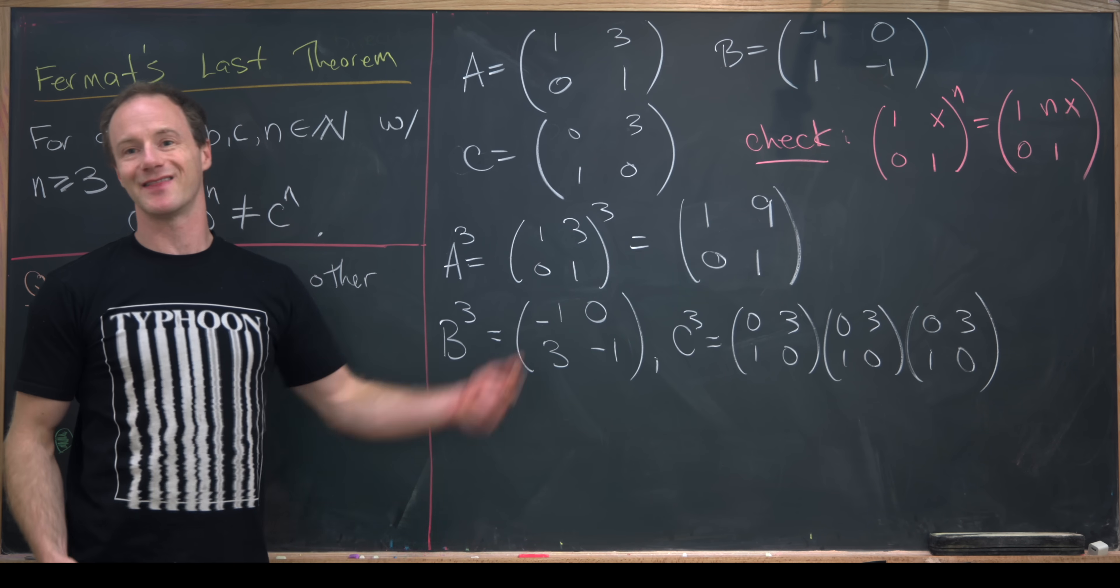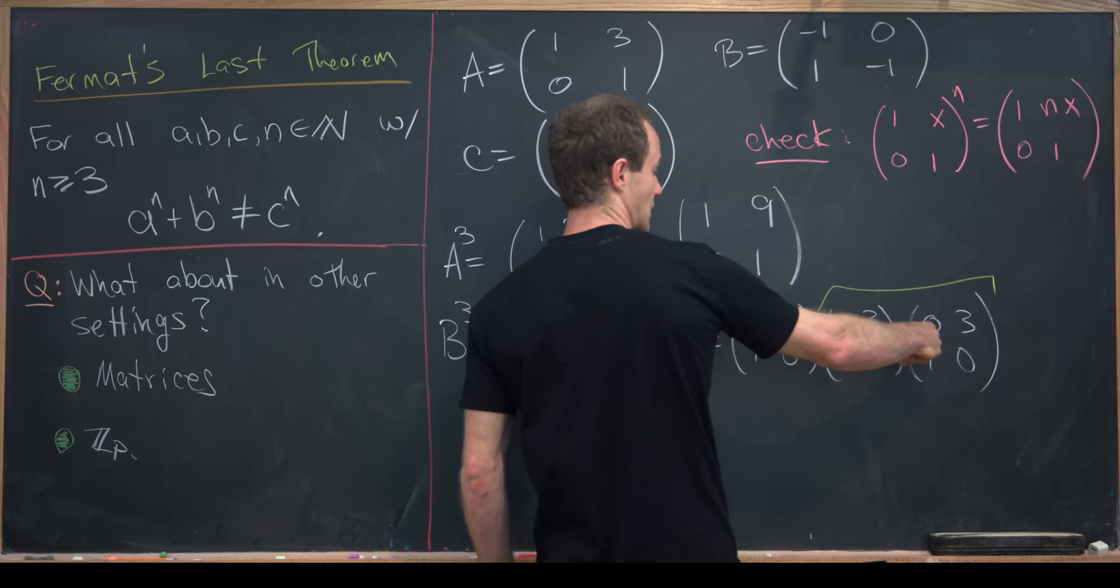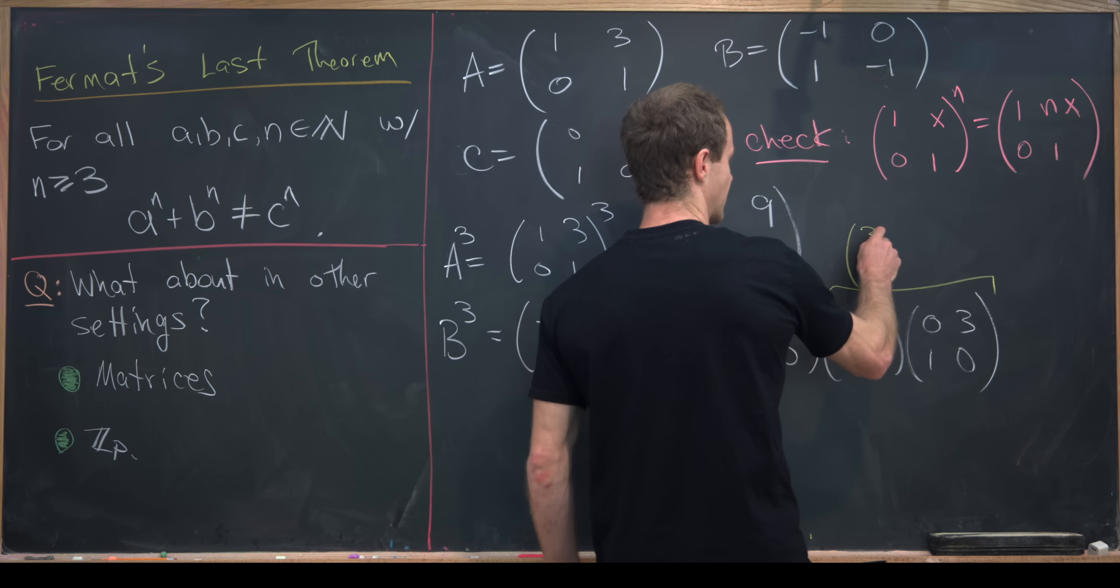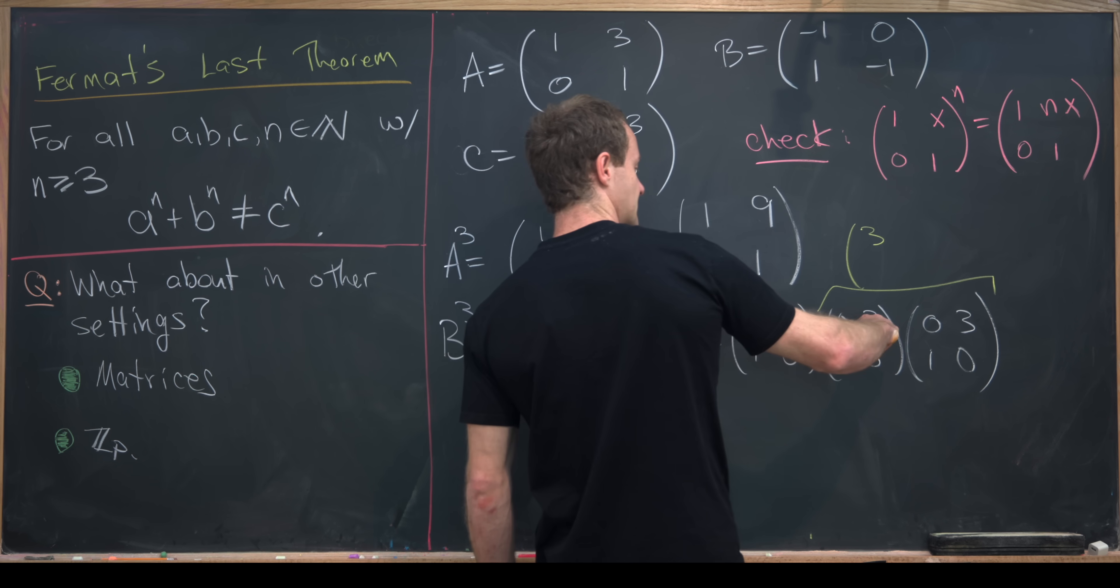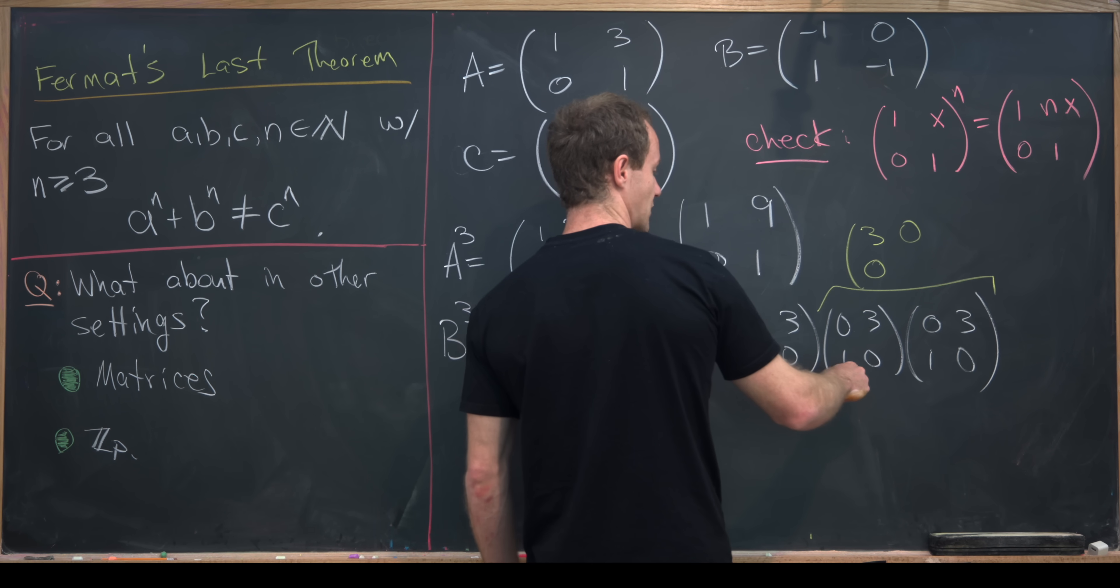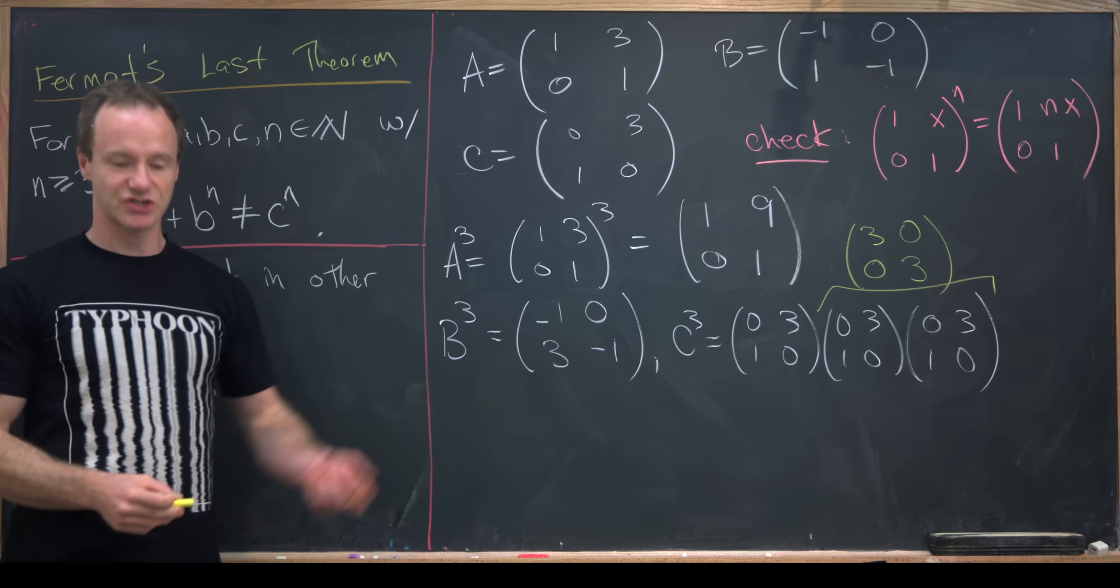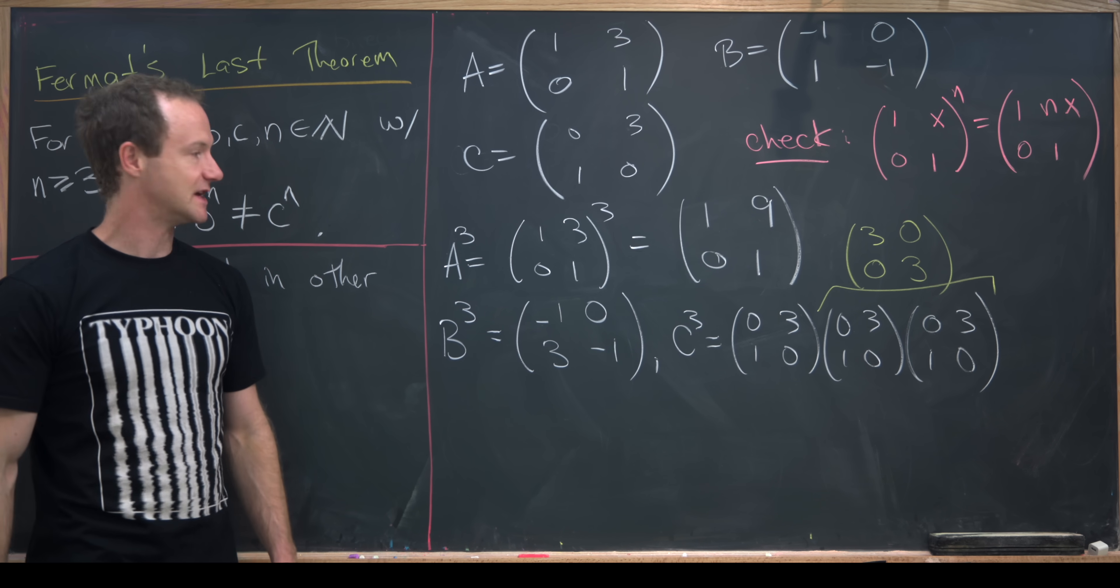So let's multiply the last two. Taking the first row in the first column, we'll see that we get 3 in this upper entry. The first row in the second column gives us a 0. We also get a 0 here, and then finally we get a 3 here. But that's just 3 times the identity matrix.